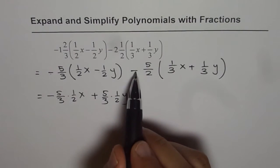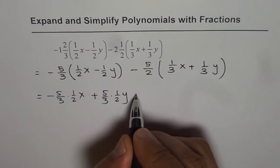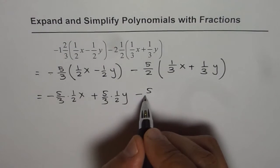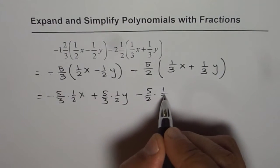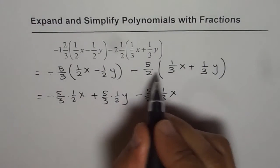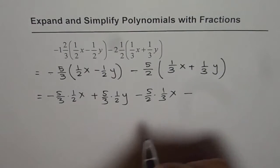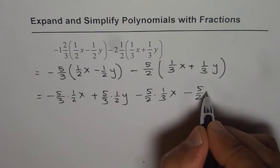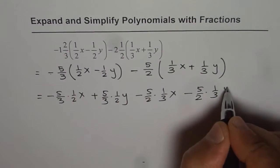Now in this term minus times plus is minus. We have minus here and we have 5/2 times 1/3x. Minus times plus is negative. We get negative sign 5/2 times 1/3y.